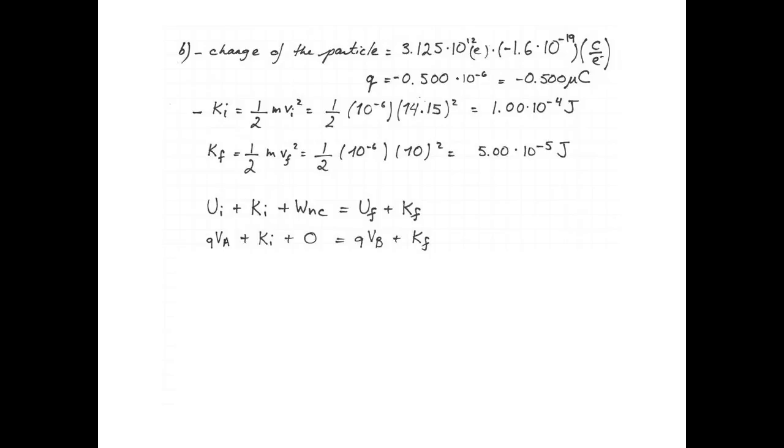So we're going to rearrange the equation to solve for VB minus VA. That involves putting all the kinetic energies on one side, and having QVB minus QVA on the other side. And then we can factor the charge, and that leaves us with VB minus VA.